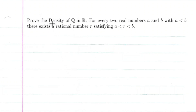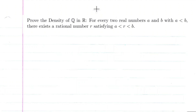I'm going to prove the density of Q in R, which states that for every two real numbers a and b with a less than b, there exists a rational number r satisfying that r is between a and b. So what the statement is basically saying is that for any two real numbers that we pick, there will always be a rational number in between those two real numbers.